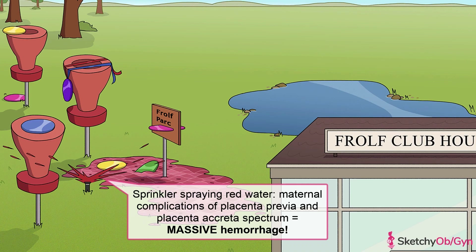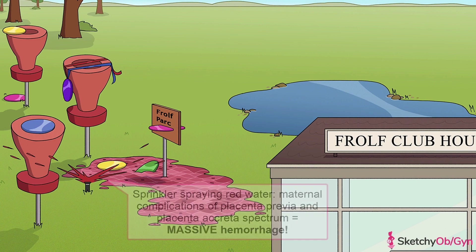The biggest maternal risk of both placenta previa and the placenta accreta spectrum is massive maternal hemorrhage. Previa is potentially hemorrhagic if the cervix starts to dilate, which can cause the placental vessels to shear and exsanguinate. The accreta spectrum can cause massive hemorrhage at the time of delivery if an attempt is made to separate the placenta from the uterus. Spoiler alert: the treatment for the accreta spectrum is total hysterectomy.